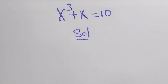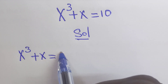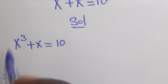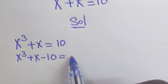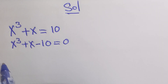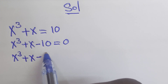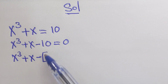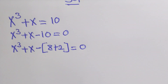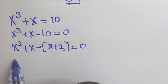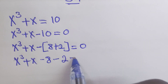We have been given x to the power of 3 plus x, which equals 10. This can be written as x to the power of 3 plus x minus 10 equal to 0. We are going to split this 10 into two different numbers: 8 plus 2, which equals 10. This will be written as x to the power of 3 plus x minus 8 minus 2, which equals 0.